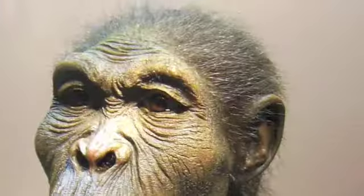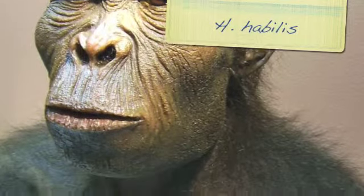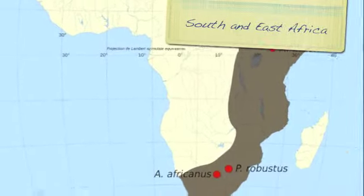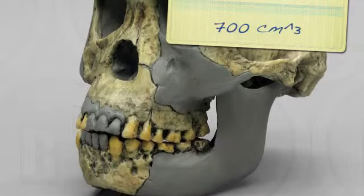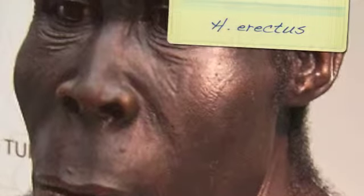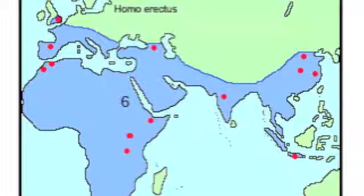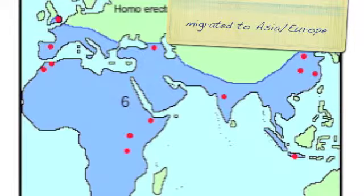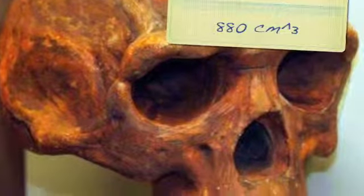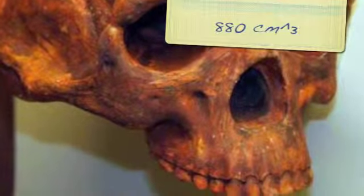Homo habilis lived from 2.4 to 1.6 million years ago throughout parts of south and east Africa. Its brain capacity was 700 cubic centimeters; it had a reduced brow ridge, lighter jaw, smaller digits, and was one of the first hominids to use stone tools. Homo erectus lived from 1.8 to 0.1 million years ago, migrating to Asia and Europe about 2.2 million years ago. Its skull capacity was about 880 cubic centimeters, with thick skull bones leading to formation of an external nose.